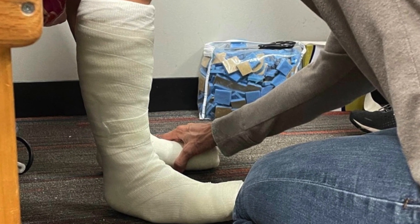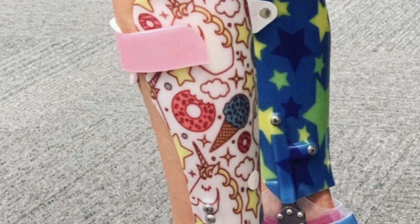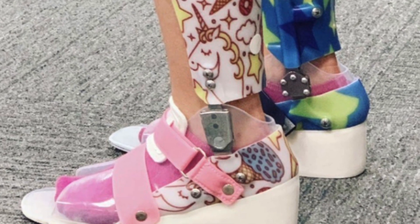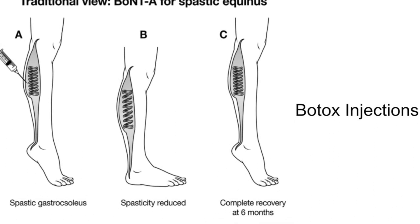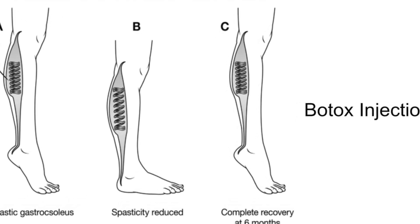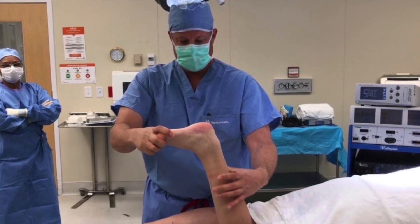Another treatment approach is serial casting — typically a 4 to 12 week program where your child's foot, ankle, and calf are casted in a position that progressively elongates their muscles. Leg braces and orthotics work similarly by elongating the calf. Botox injections in the calf work by temporarily weakening the muscle, which allows it to stretch, elongate, and become more pliable.